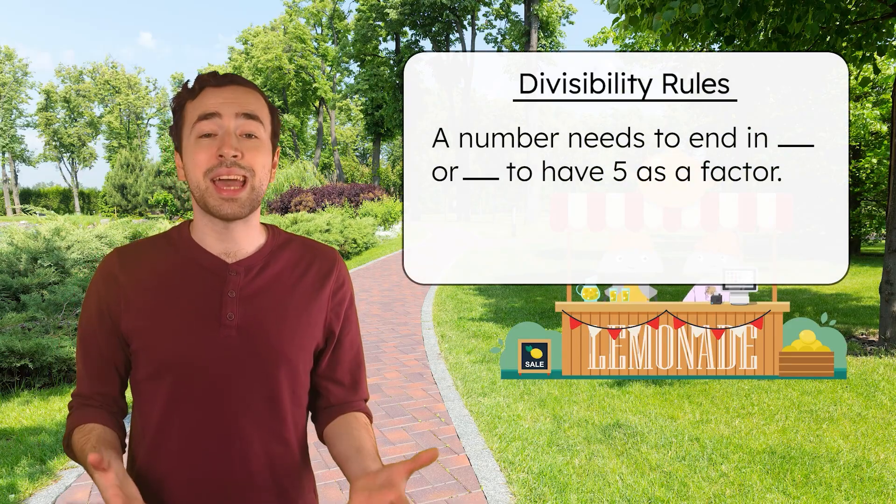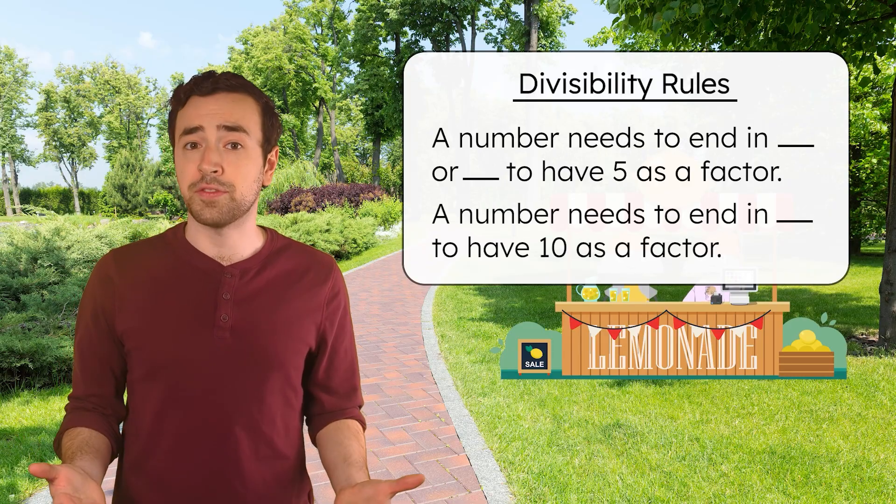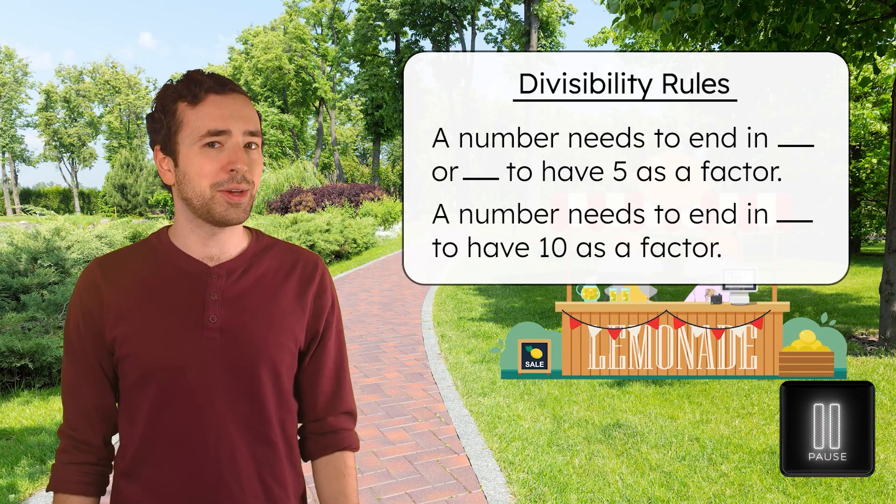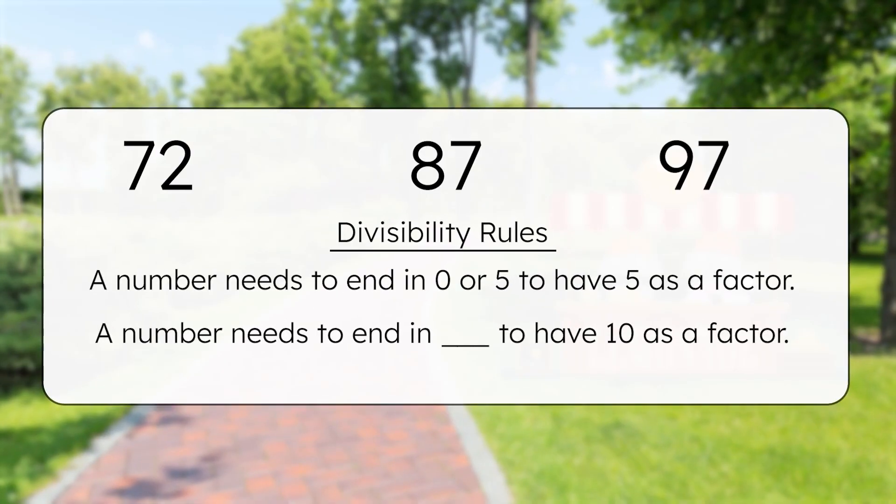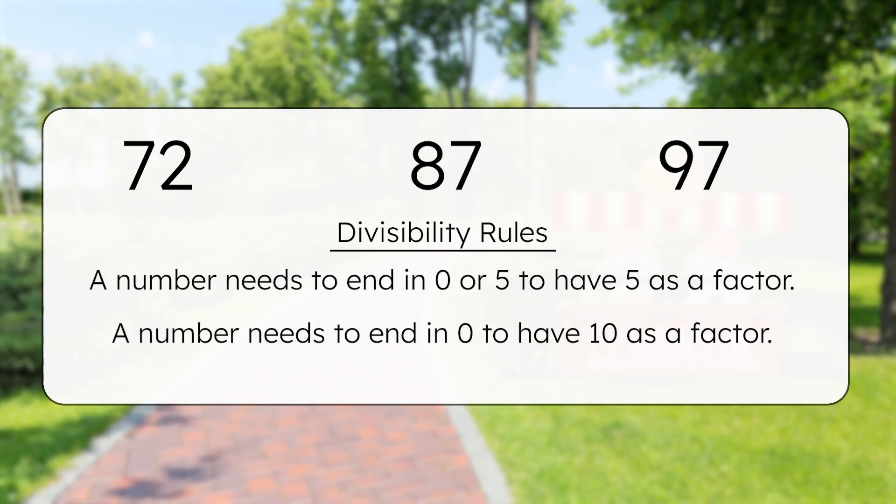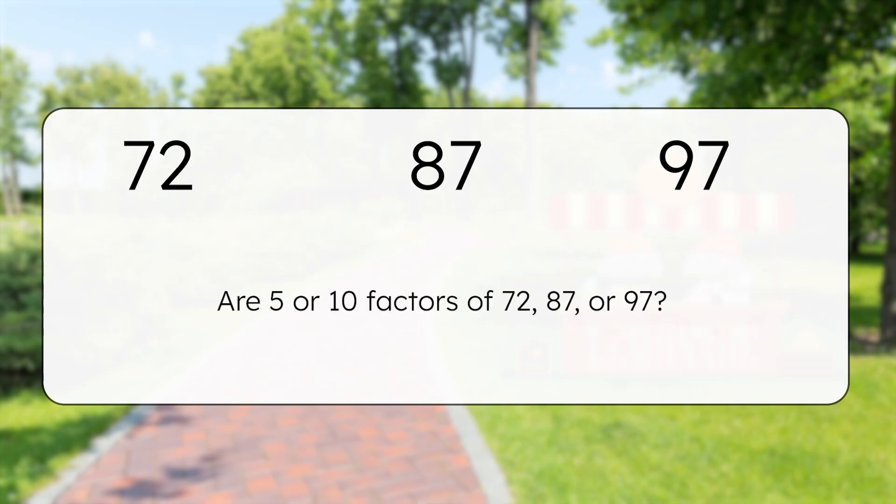You also know the divisibility rules for 5 and 10. What does a number need to end in for it to have 5 as a factor and to have 10 as a factor? Pause here to record your thinking in your guided notes. Numbers that end in 0 or 5 will always have 5 as a factor, and numbers ending in 0 will have 10 as a factor. These rules help us quickly check if numbers are divisible by 5 or 10 to find potential factors. For example, are 5 or 10 factors of 72, 87, or 97? None of them end in 5 or 0, so they aren't divisible by 5 or 10. That means 5 and 10 aren't factors of these numbers.